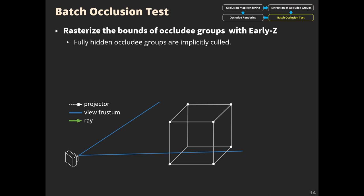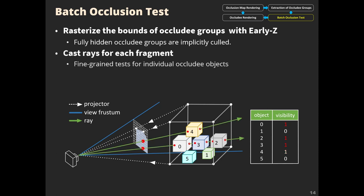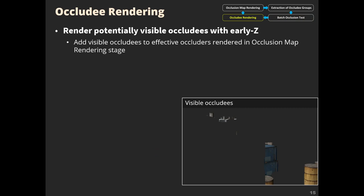The third stage is batch occlusion test. Traversal for intersections starts from the interior node, triggering rasterization of the bounds. In this phase, fully hidden occluded groups are implicitly culled, and a primary ray is cast at each fragment for fine-grained tests of individual occludees. Objects at intersections are added to the set of potentially visible occludees. Ray casting should not stop at the nearest intersection, because rays intersecting the conservative bounds are not necessarily intersecting real object geometries.